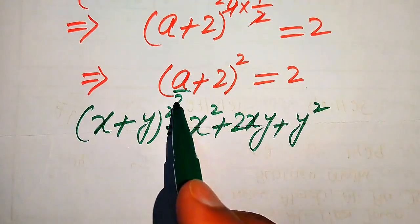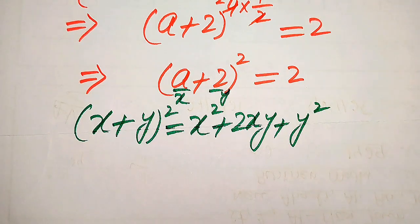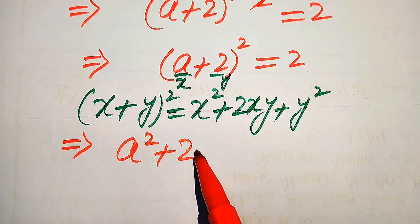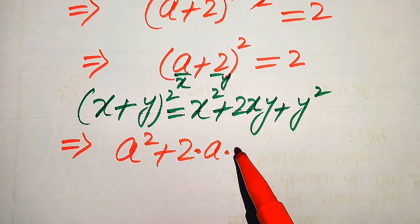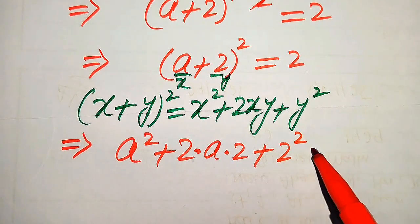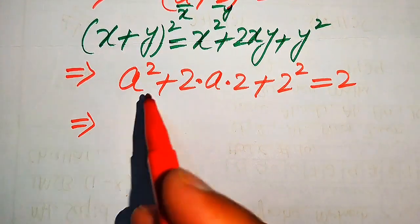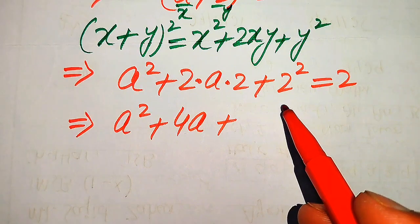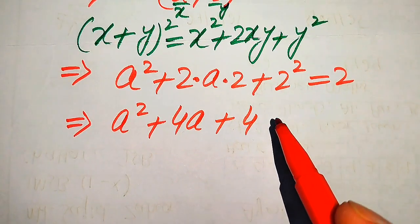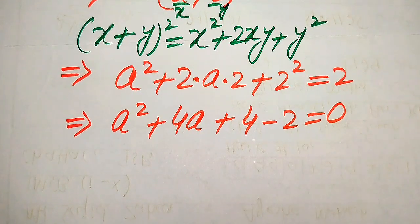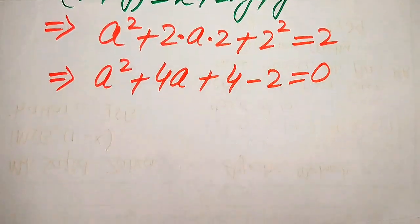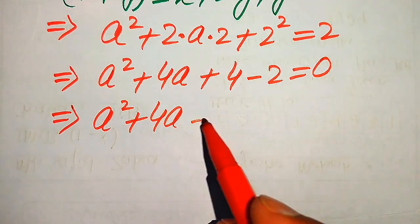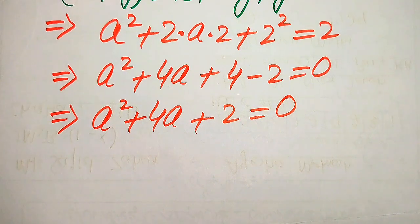Here x is a and y is 2, so according to that formula we expand: a² + 2 times a times 2 + 2² = 2. In the next step that gives us a² + 4a + 4 = 2. Moving the 2 to the left hand side, it becomes minus 2, so the equation equals 0: a² + 4a + 4 − 2 = 0.